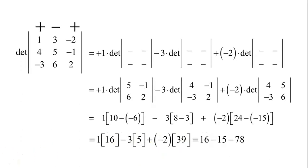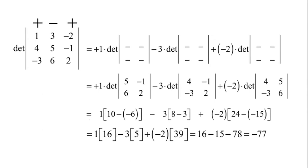We get 16 minus 15, minus 78, which gives us negative 77. So the determinant for that 3 by 3 matrix is equal to negative 77.